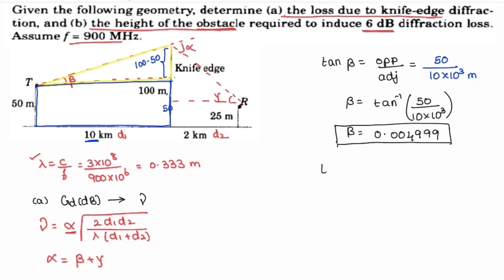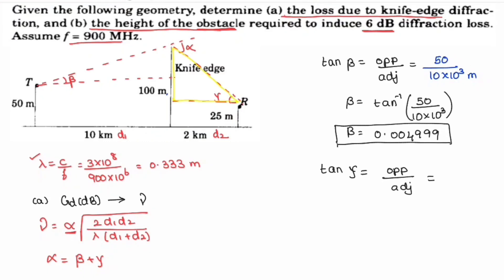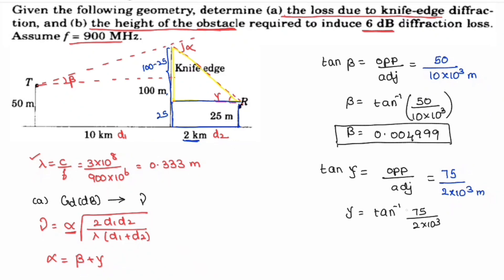Similarly, for gamma at the receiver side: the receiver height is 25 m and the total obstacle height is 100 m, so the opposite side is 100 minus 25 equals 75 m. The adjacent side is D2 = 2 km = 2×10³ meters. Therefore, gamma equals tan⁻¹(75 divided by 2×10³), giving gamma equals 0.03749 radians. Note: ensure your calculator is in radian mode.